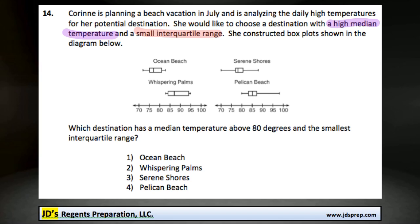We've got four box plots, and we need to find out which destination has a median temperature above 80 degrees and the smallest interquartile range. Let's start by looking at the median temperature above 80.